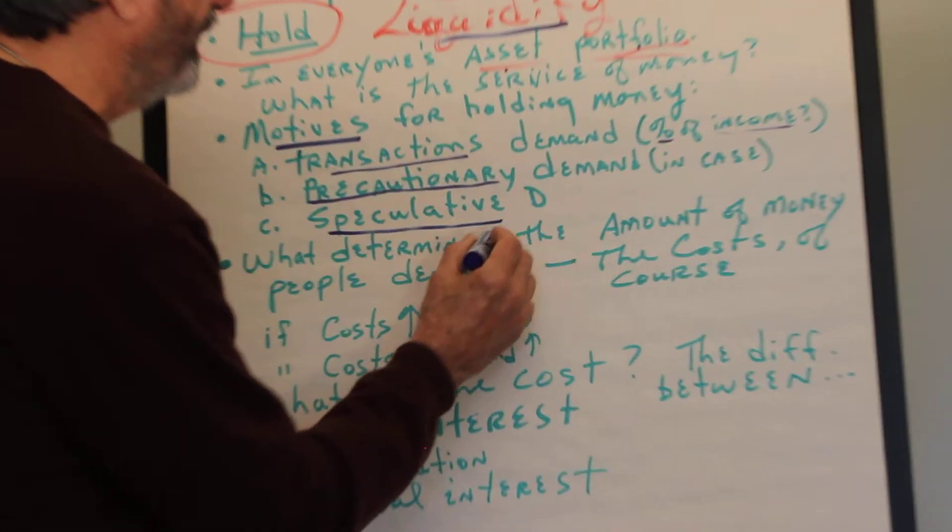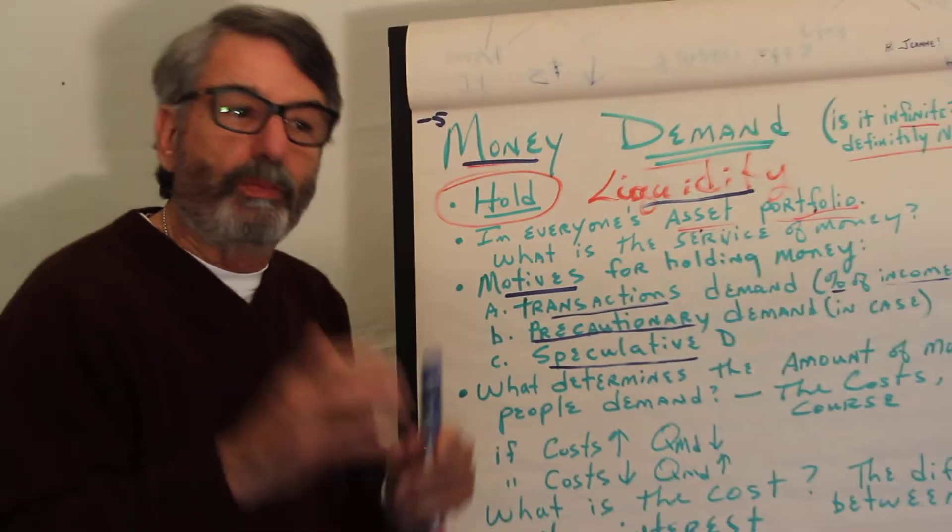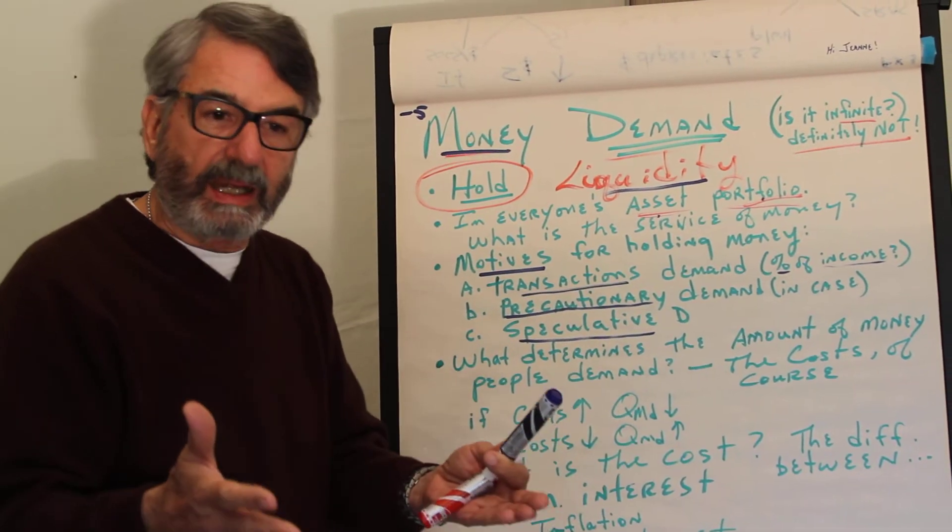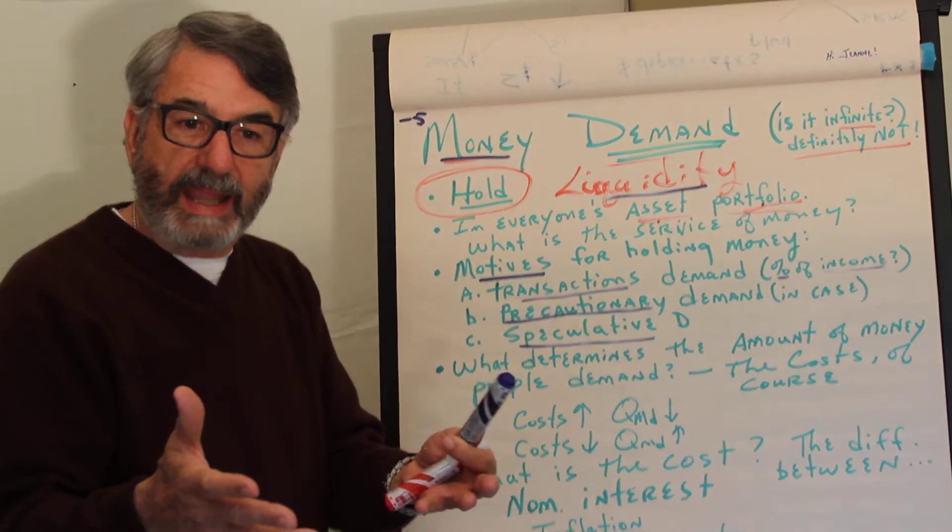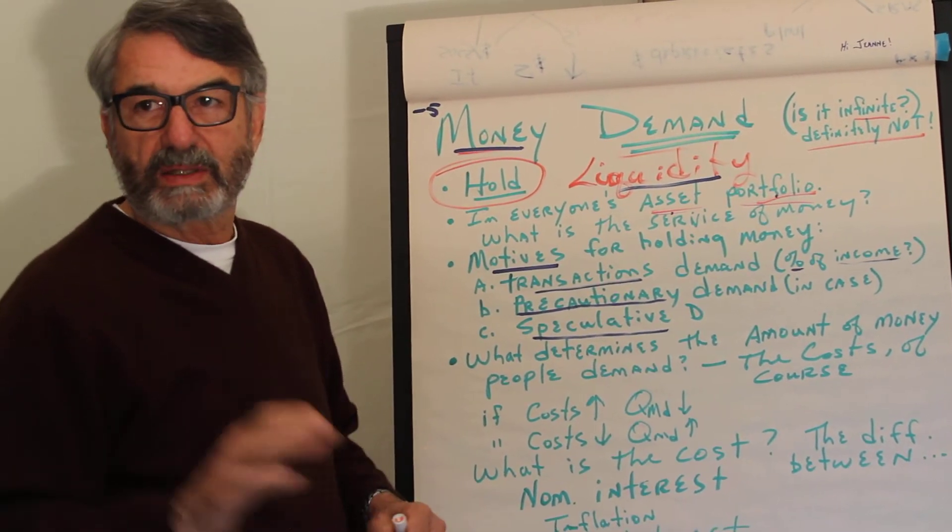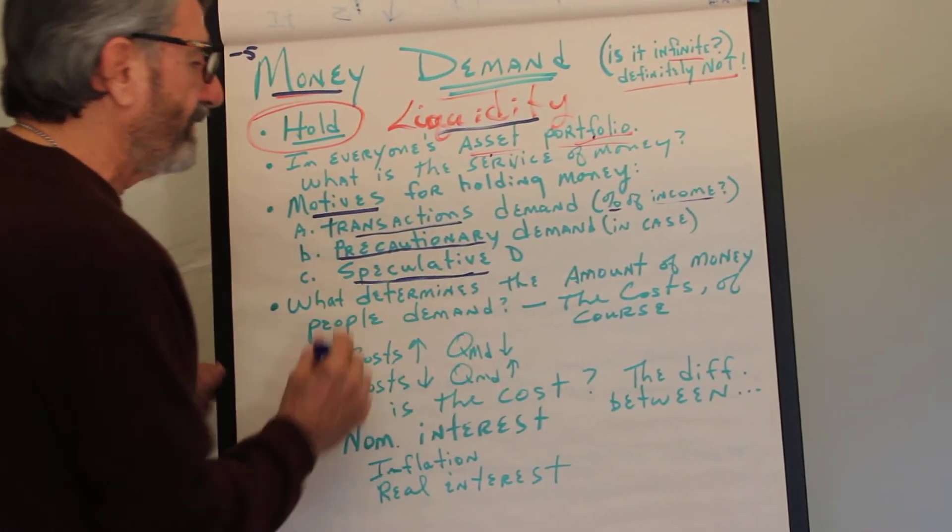And finally, speculative demand. Speculators are people who buy now in the hopes of selling later at a profit. In order to, if you see a bargain, in order to buy it, you have to have the money now to buy it so that you can sell it later at a profit. So speculators keep money for speculative purposes.